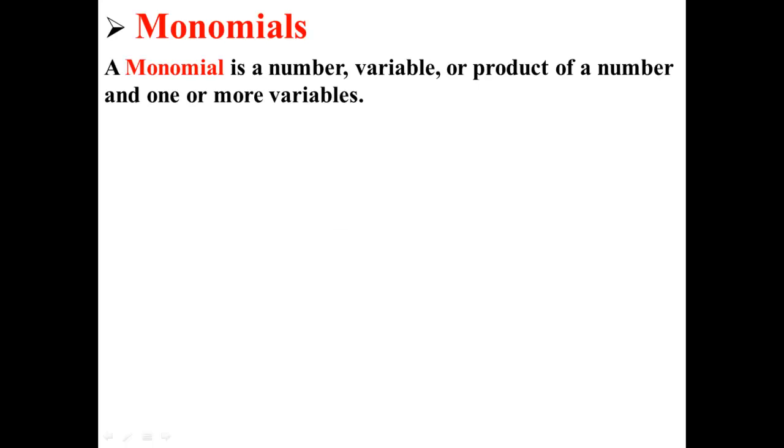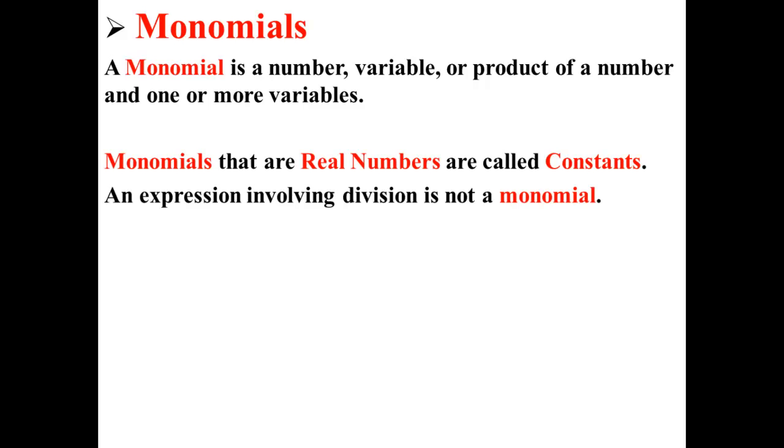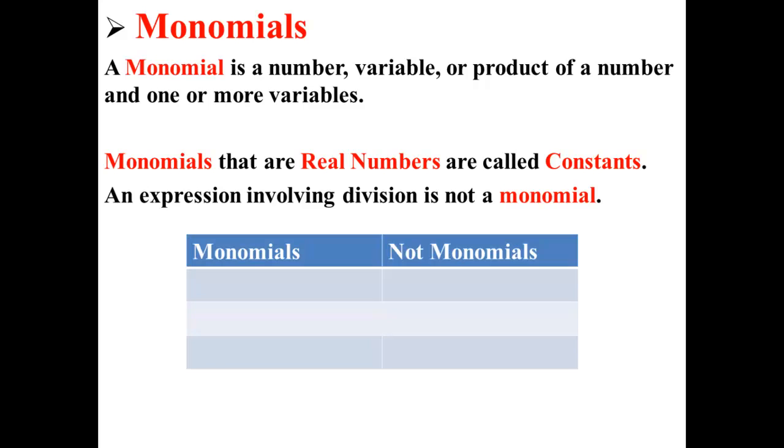Let's talk about monomials. A monomial is a number, variable, or product of a number and one or more variables. Monomials that are real numbers are called constants. An expression involving division is not a monomial.